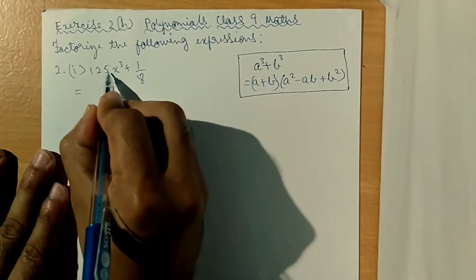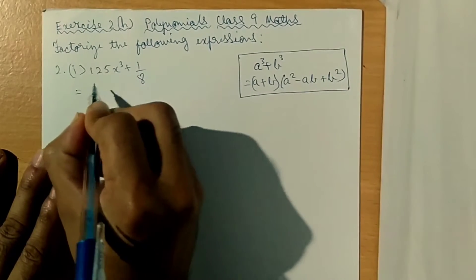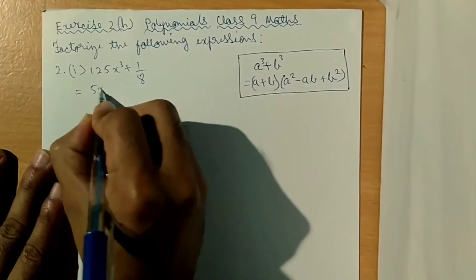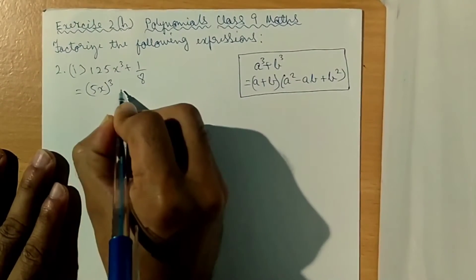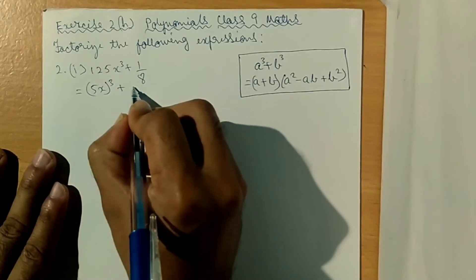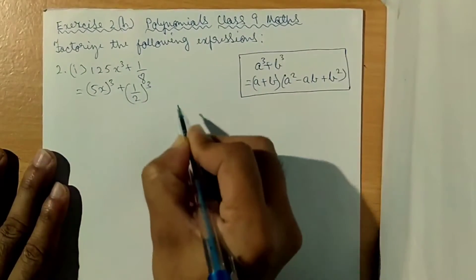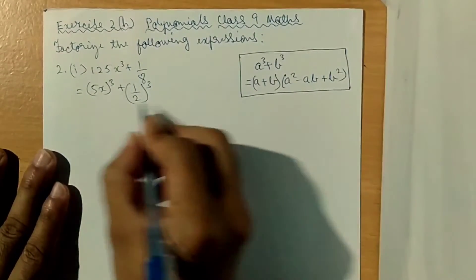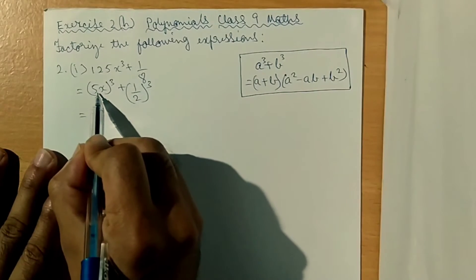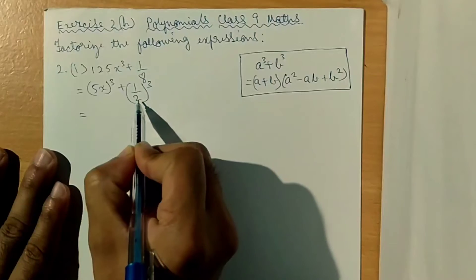125 can be written as 5 cube, so 125x cube is (5x) cube. And 1 by 8 can be written as 1 by 2 cube. So here a is 5x and b is 1 by 2.